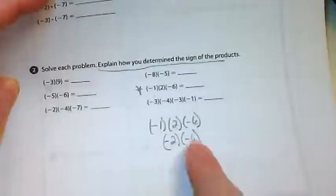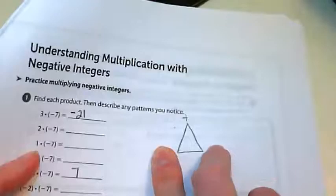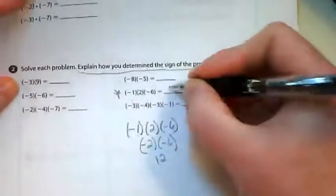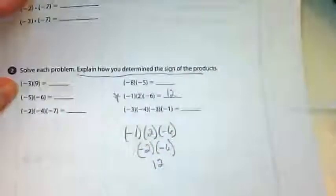1 times 2 is 2. So this is negative 2 times negative 6. Now I have a negative times a negative. Negative times negative is a positive. And 2 times 6 is 12. So the answer to this is 12.